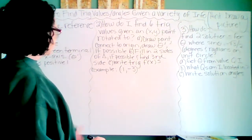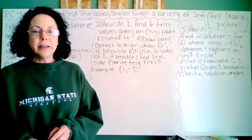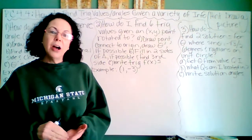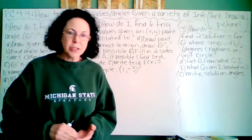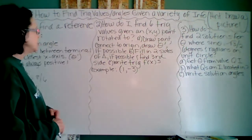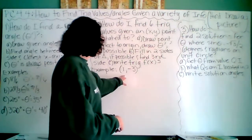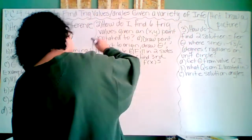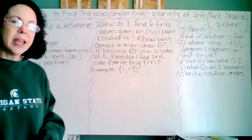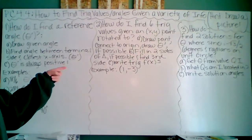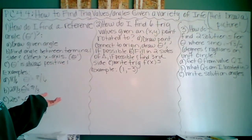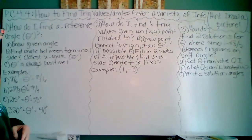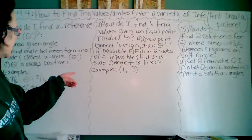Next, here's how the book says it: given the point (1, -3) that is on the terminating side of an angle that's been rotated theta, find the six trig values. So how do I find six trig values given a point? The point (1, -3) — we go right and down — but we could also have a point on the end of a radius and rotate to that point. What we're going to do is draw the point, connect it to the origin, draw our reference angle if possible, fill in two sides of the triangle if possible, and find the third side.